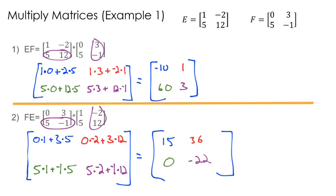Notice, with normal multiplication, 3 times 4 is the same thing as 4 times 3. The order doesn't matter. It's commutative is what we call that.